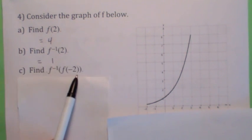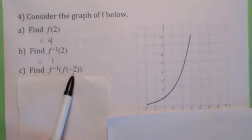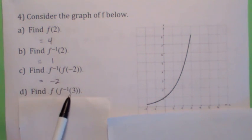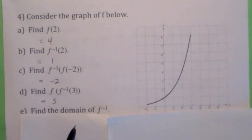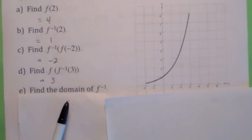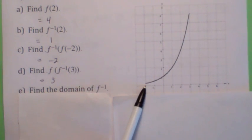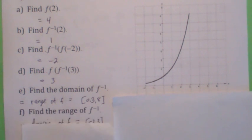What's f inverse of f of negative 2? By the inverse function property, it's negative 2. What's f of f inverse of 3? That's 3. What's the domain of f inverse? That's the range of f, which would be about 0.3 to 8, I think. And what's the range of f inverse? That's the domain of f, which looks like about negative 2 to 8.